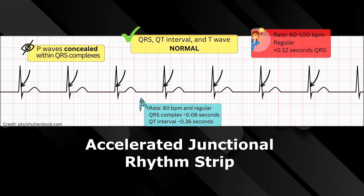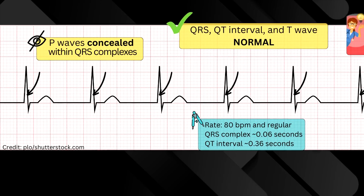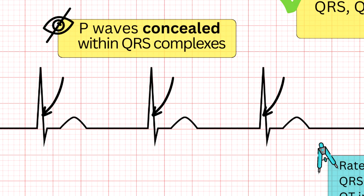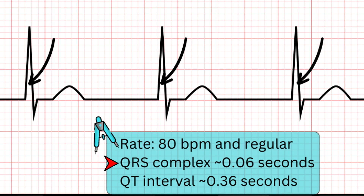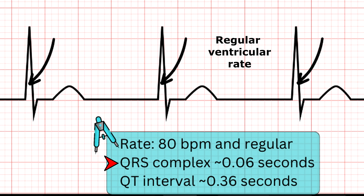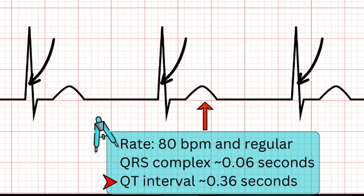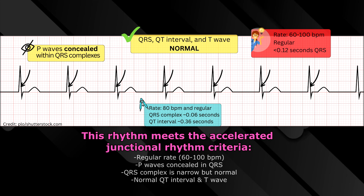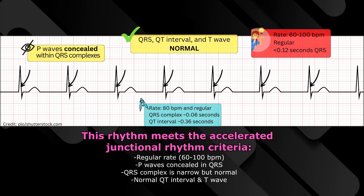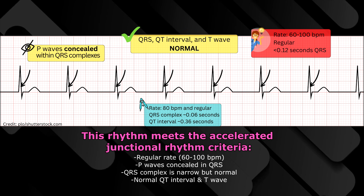Now let's look at this rhythm strip of accelerated junctional. We can see immediately that there are no visible P waves — our P waves are concealed within our QRS complex. The QRS complex is narrow, measuring about 0.06 seconds. Measuring from R wave to R wave, we notice it occurs regularly, so we have a regular ventricular rate. The QT interval is normal, measuring around 0.36 seconds, and our T wave is normal. When we count the rate, we get 80 beats per minute. This meets the criteria for accelerated junctional: regular rate between 60 to 100 beats per minute, P waves concealed within the QRS complexes, narrow QRS, normal QT interval, and normal T wave.